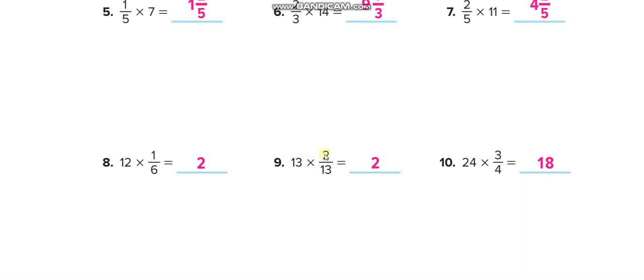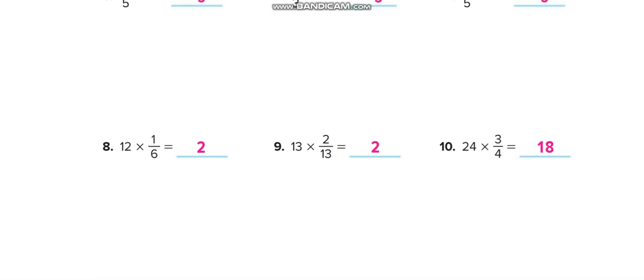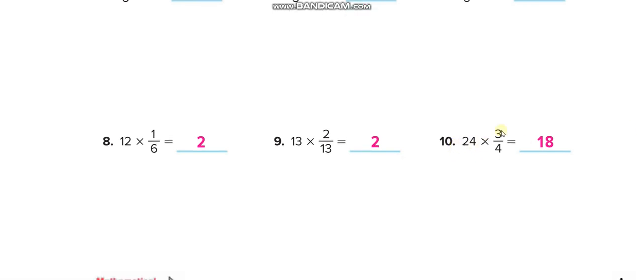So here you will solve it and simplify it. All these are simplified answers. 13 times 2 is 26. 26 divided by 13 is 2. 12 times 1 is 12. 12 divided by 6 is 2. Okay, 24 times 3 is 72. 72 over 4. 72 divided by 4. You can divide it here with the big numbers.